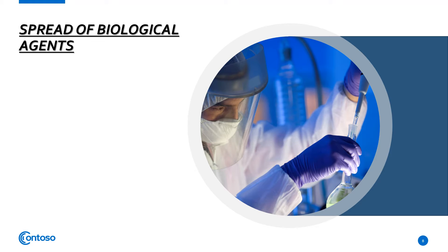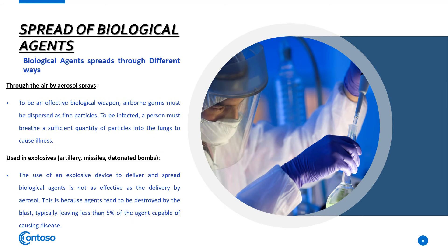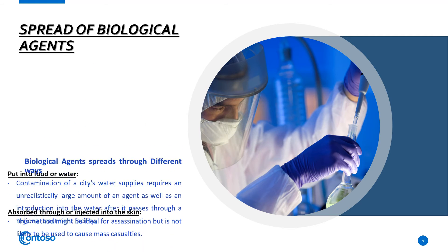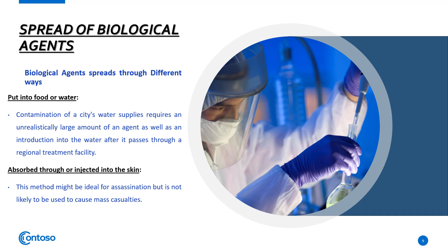Spread of Biological Agents — how are biological agents spread? There are many ways: Number 1 is through the air by aerosol sprays; Number 2 is their use in explosives. Other methods include putting these agents into food or water, or absorbing them through or injecting them into the skin.